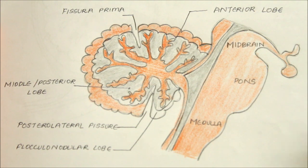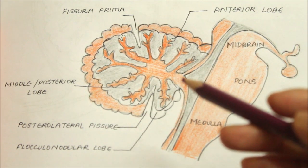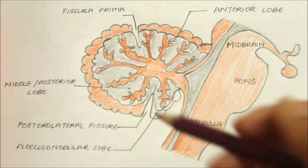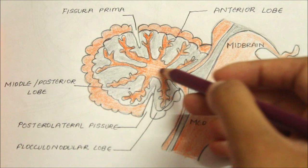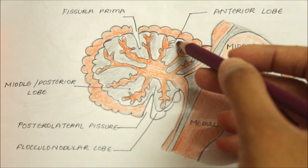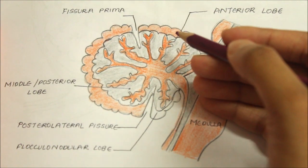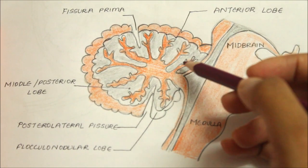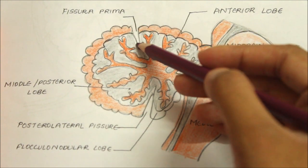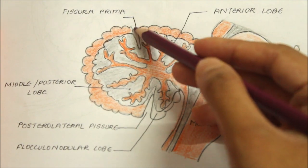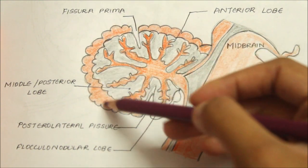Looking at this cross-sectional lateral view of the cerebellum, each hemisphere is divided into three lobes. First is the anterior lobe, which lies on the anterior part of the superior surface. It is separated from the middle lobe by the fissura prima — the fissure that separates the anterior lobe from the middle lobe.